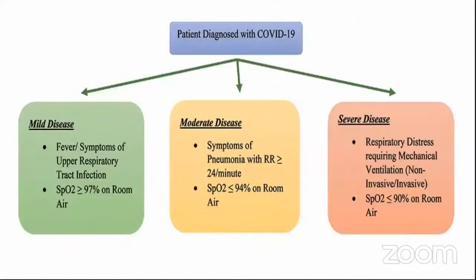Regarding clinical manifestations: most patients have mild disease with no evidence of pneumonia — only upper respiratory involvement or asymptomatic infection. Moderate disease shows evidence of pneumonia, but not significant. Severe disease involves complications beyond pneumonia with development of ARDS. Critical disease — the most dangerous and associated with highest mortality — involves shock, multi-organ involvement, or significant thrombosis.